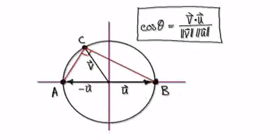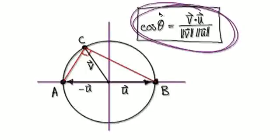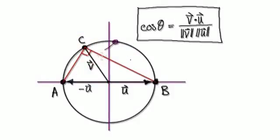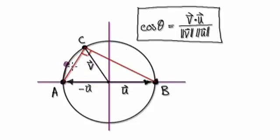Let's give you guys some practice now. So use your newfound knowledge to show that no matter where C is — suppose C is here — then this angle will always be 90 degrees. Suppose C is here, then this angle here will be 90 degrees. Suppose C is here, then this angle here will be 90 degrees.